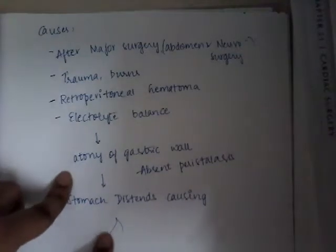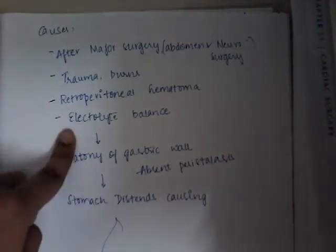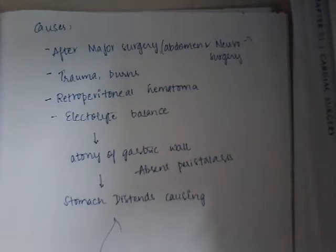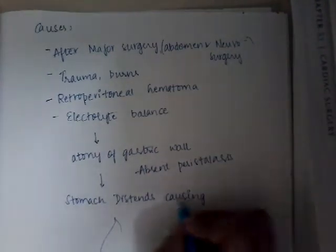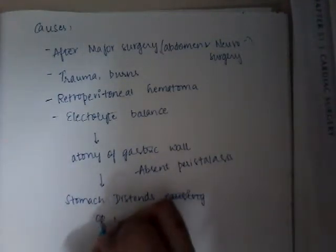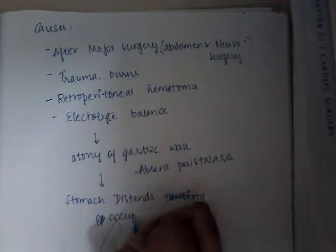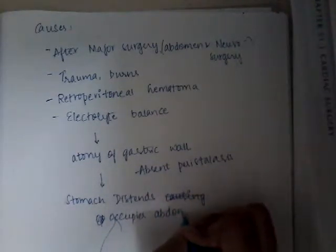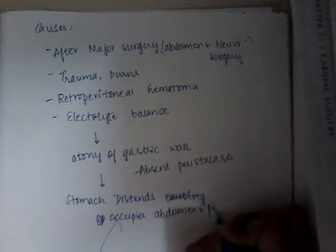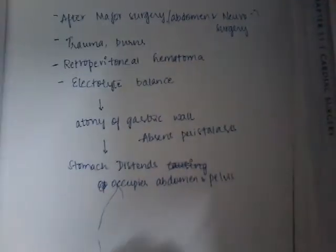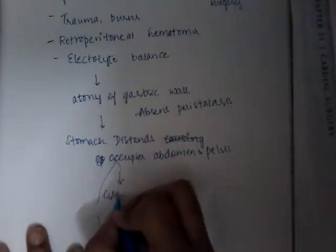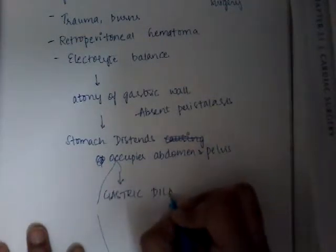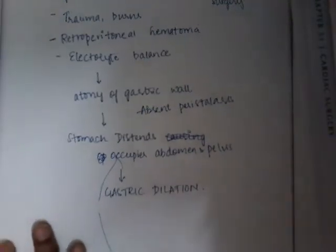After these causes there is atony of the gastric wall and absent peristalsis, so the stomach distends and occupies the whole abdomen and pelvis, involving all the regions. If this occurs acutely, it is called acute gastric dilatation.